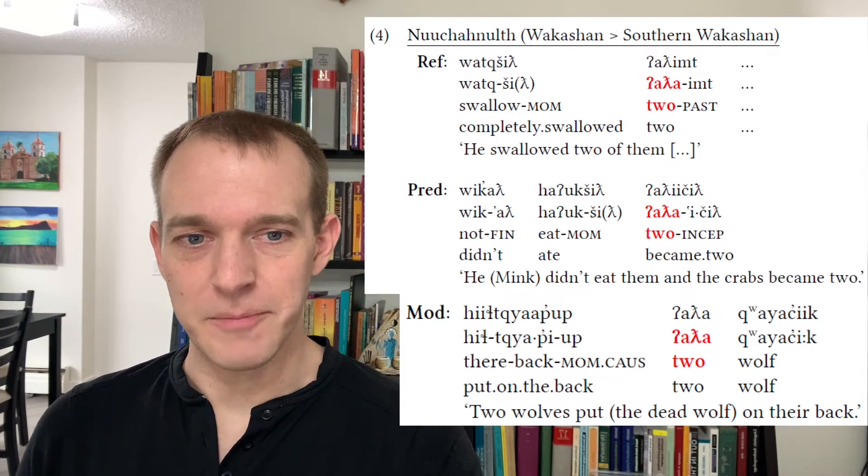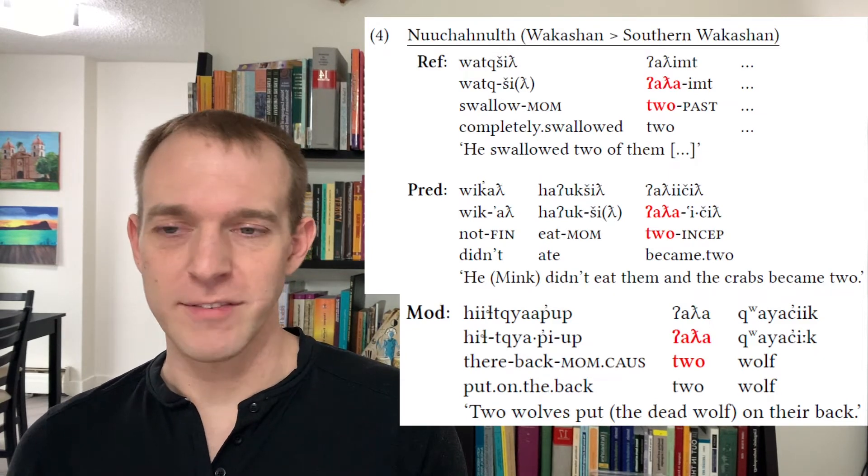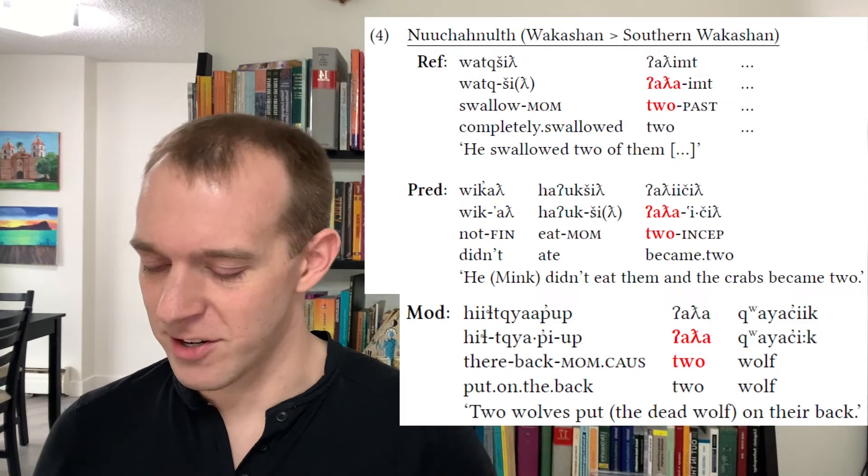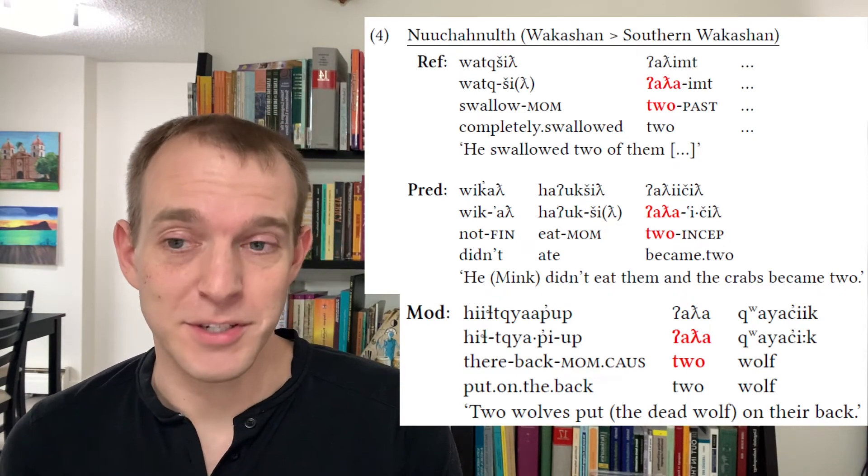it's being used as a modifier, pretty similar to how we would use it in English. They put two wolves on their back. So you can see how difficult it is. How would you classify the stem two in this language, noun, verb, or adjective? Obviously, you'd need to look at the language as a whole and figure out your diagnostics. But in my opinion, nobody's really successfully been able to do that yet.